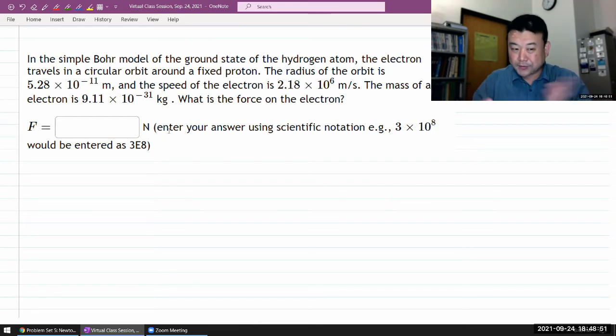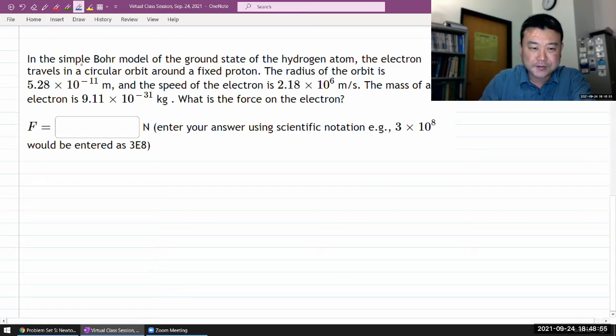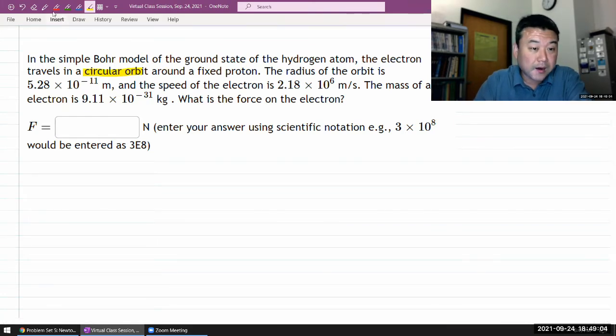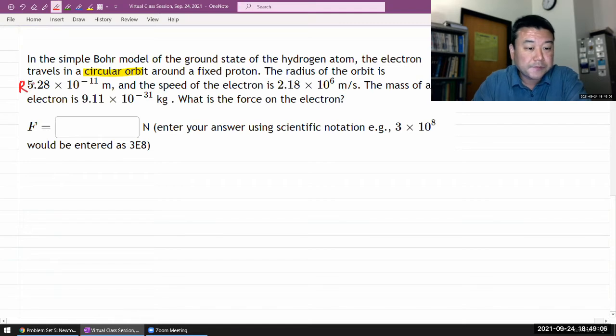It says the electron travels in a circular orbit. Okay, that sounds good. I know how to handle circular orbit, uniform circular motion, around the fixed proton. The radius of the orbit, okay we have R, that's good. Is this number, and the speed of the electron is this, the same side, but okay that number.